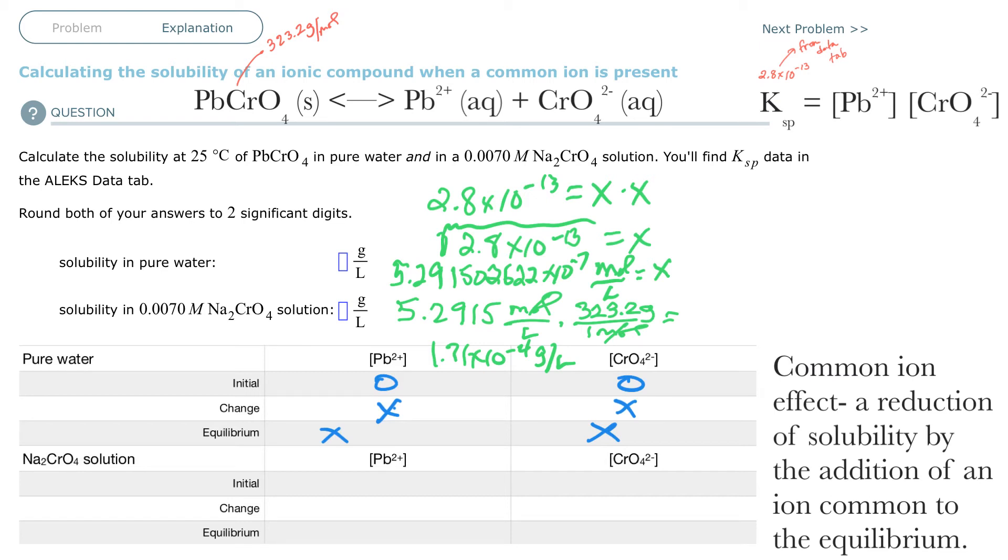If I know that that's moles per liter and I need grams per liter, I have to go through the periodic table to turn moles into grams. And so that's 323.2, moles will cancel, and I get 1.71 times 10 to the negative 4 grams per liter. That's how much dissolves in one liter of water, which is tiny, tiny, a little teeny bit will dissolve in a whole liter of water. So I want two significant digits. So I'm going to do that as 1.7 times 10 to the negative 4 grams per liter.